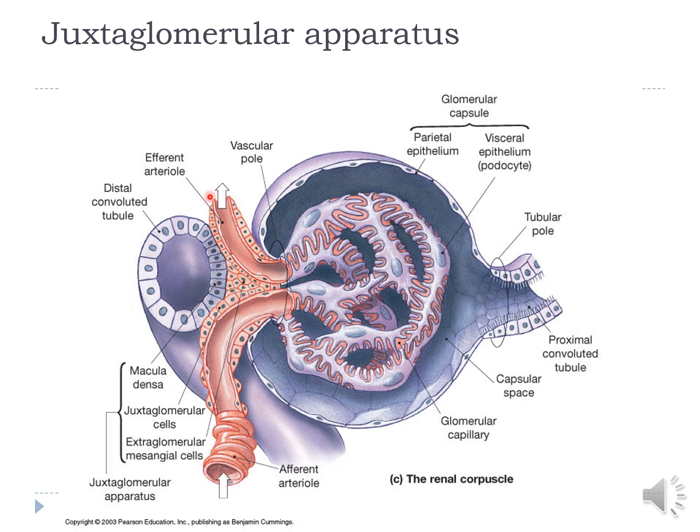The juxtaglomerular apparatus is the next topic. It is formed by the macula densa, the juxtaglomerular cells, and the extraglomerular mesangial cells. This will be discussed in the next lecture. Thank you so much for joining.